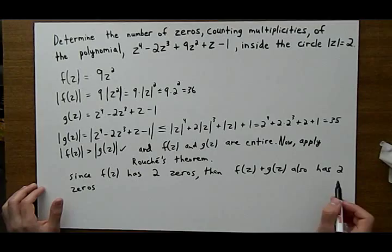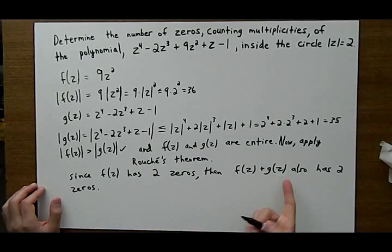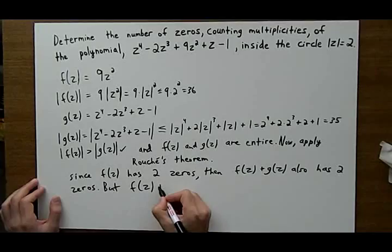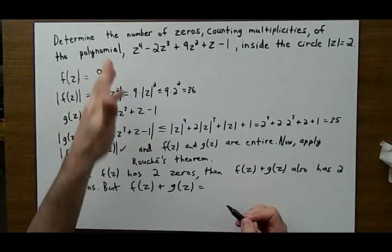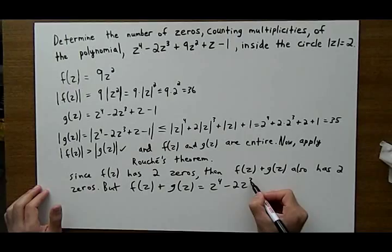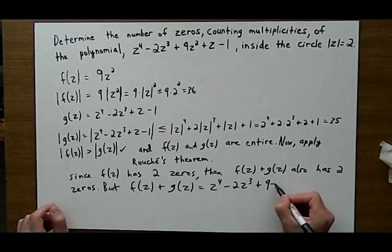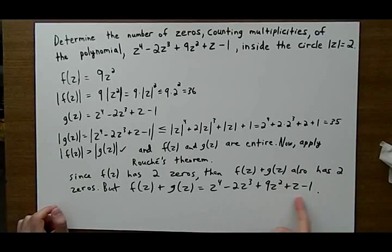f of z plus g of z is equal to this whole polynomial, which is exactly what we wanted. That's exactly our target. That's what we were looking for. So that means the original polynomial has two zeros. So it has two zeros inside the circle with radius equal to two.